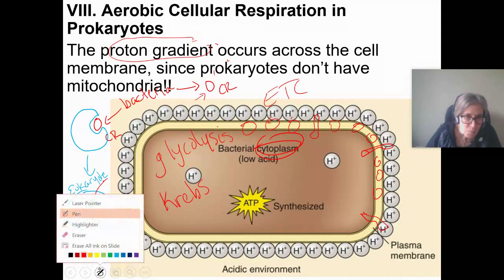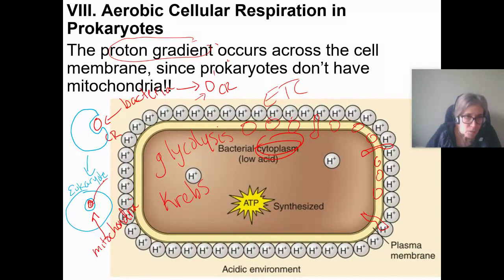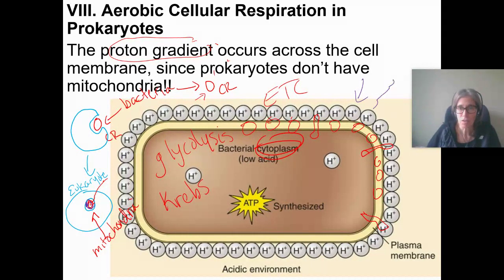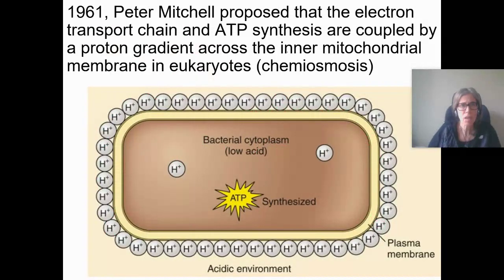In mitochondria, the proton gradient forms in the intermembrane space — right between the inner and outer membranes. In bacteria, the proton gradient happens just outside their cell membrane. You might wonder: why don't these protons just diffuse away? The answer is that they are attracted to more negatively charged materials inside the cell, so they still maintain a proton gradient, but it's not protected by another membrane outside.